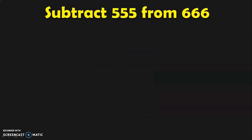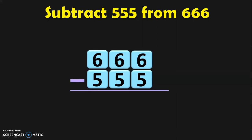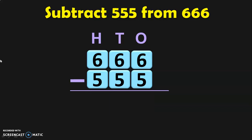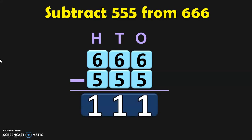Next, let us do the sum: subtract 555 from 666. Write the numbers one below the other, write down the place values, and begin subtraction from the ones place. Six minus five in ones place is one. Six minus five in the tens place is again one. And in the hundreds place, six minus five also gives one. So the subtraction of these two three-digit numbers gives the answer 111.